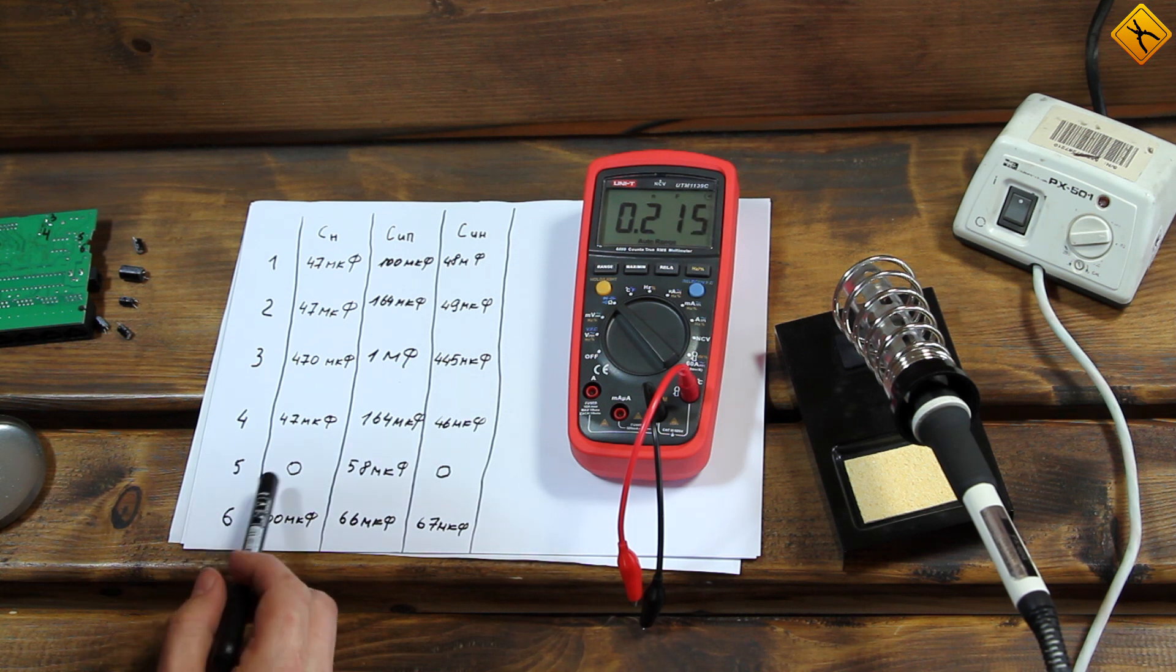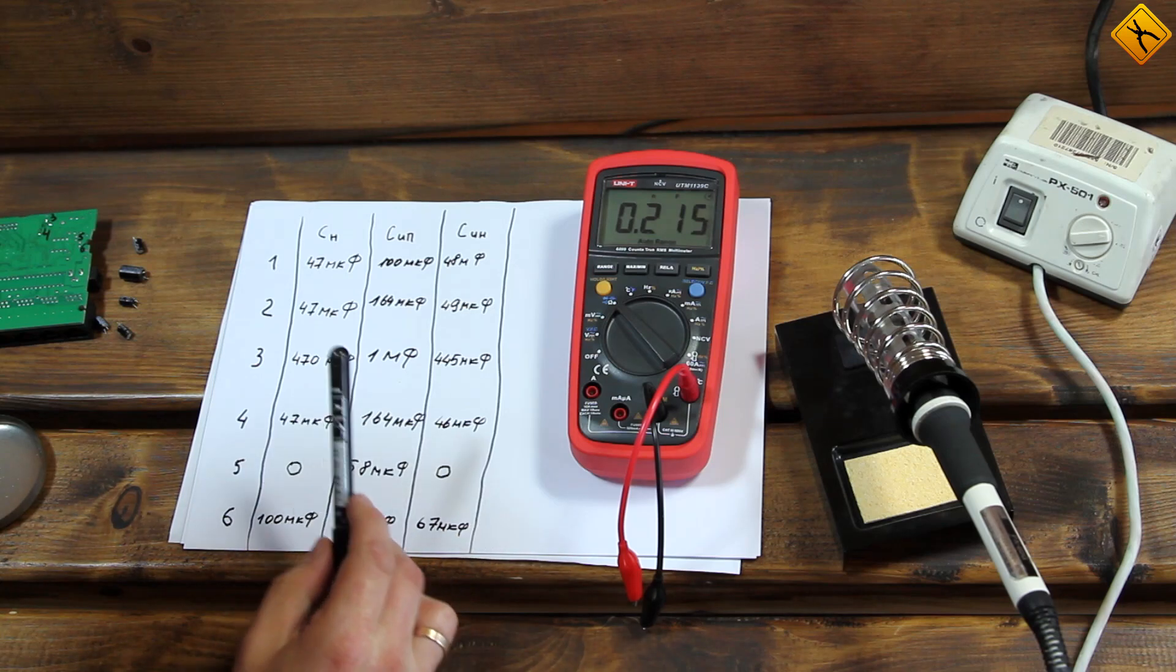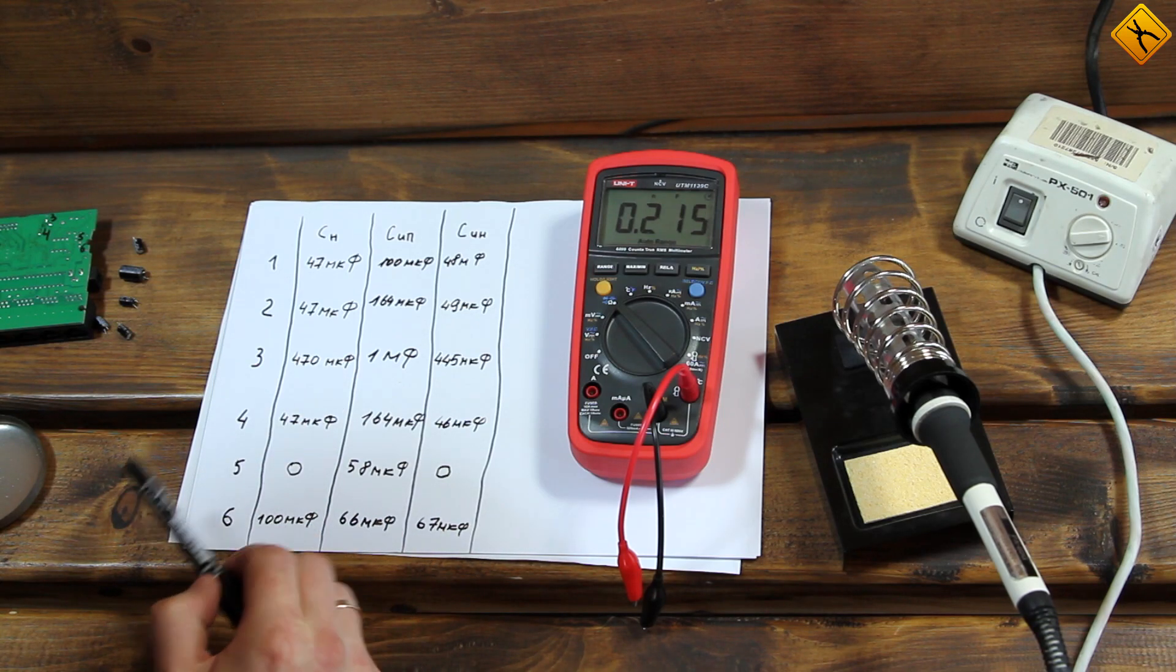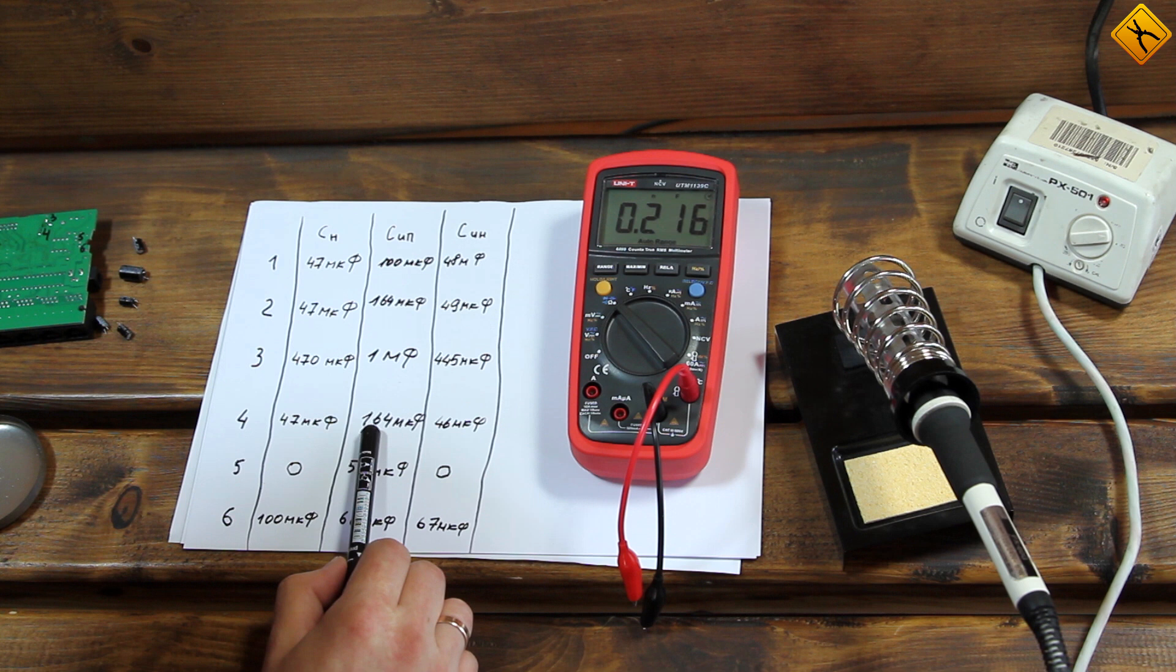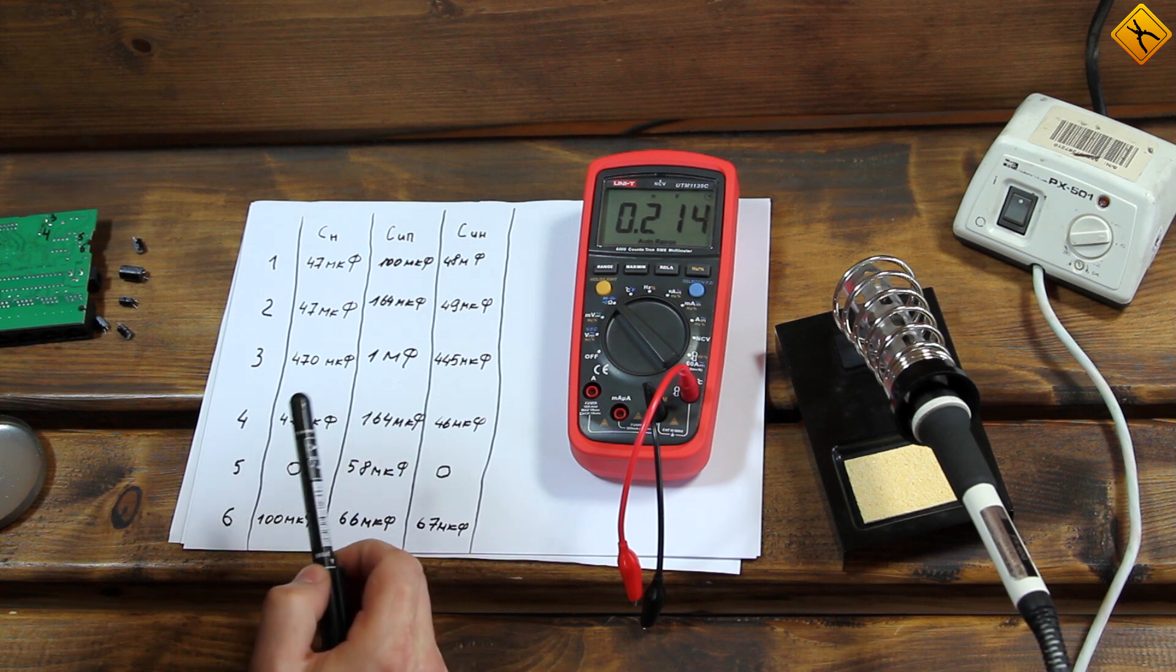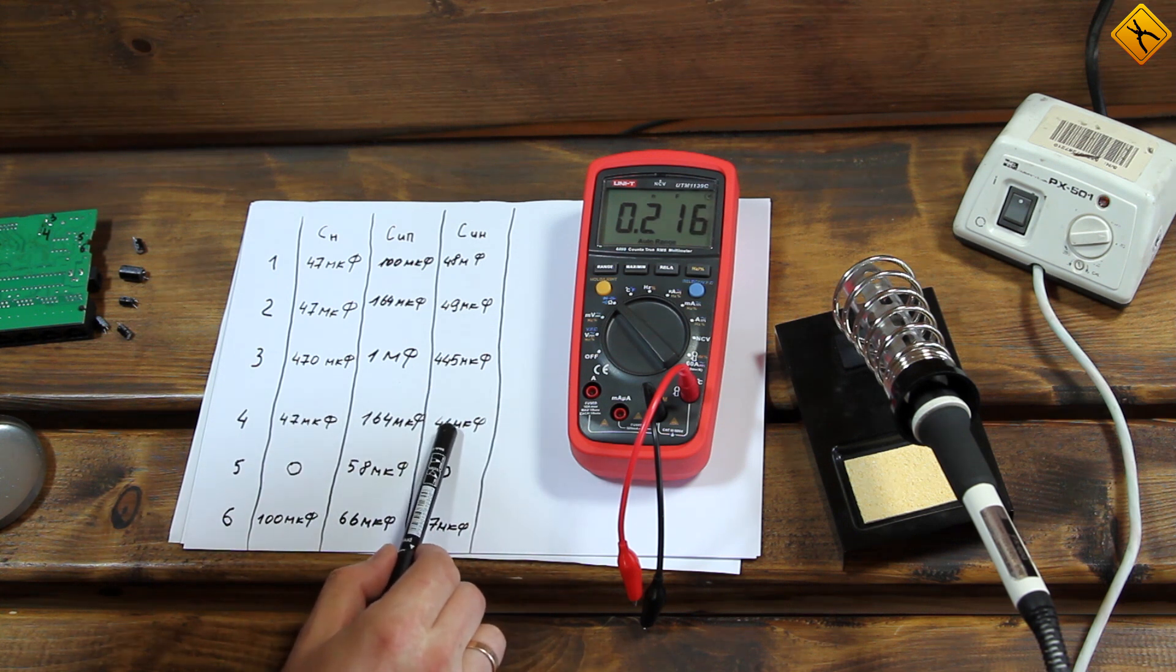Here, we didn't even have a capacitor, and we measured 58 microfarads. Over here, we had a stated capacitance of 47 microfarads. We measured it on the PCB at 164, and it turned out to actually be somewhere around 46 to 47.